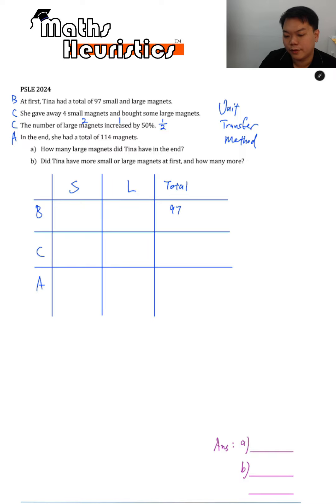The total here is 97. So she gave away four small and bought large magnets such that it increased from two units by one unit to give you a total of three units here.